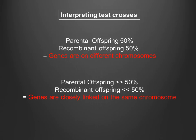Therefore, when faced with the task of determining the chromosomal arrangement of two genes — that is, whether they are linked or not linked — we can perform a test cross. If the two genes are on separate chromosomes, all four classes of offspring will be produced in equal proportion. When the two genes are linked, the two parental classes of offspring will outnumber the two recombinant classes. It is even possible, in cases where two genes are very tightly linked, that only offspring of the parental type will be produced.